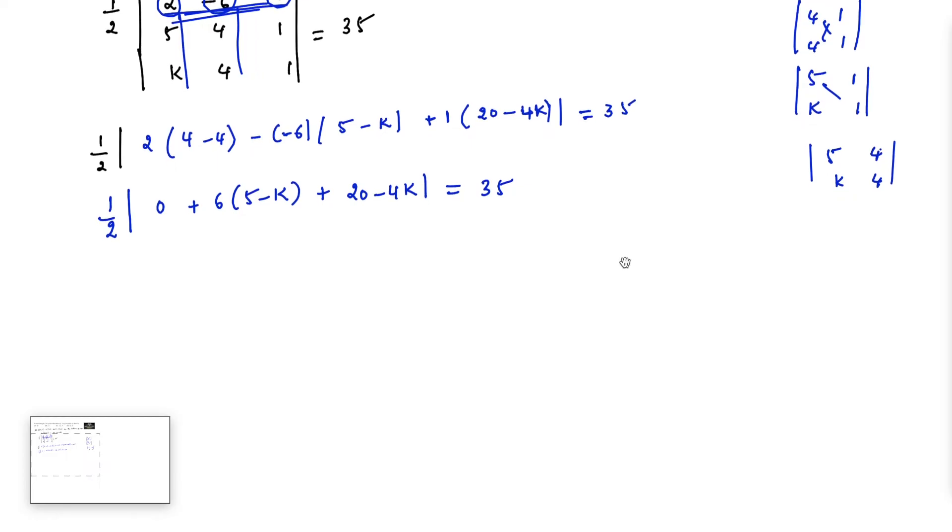Which implies that 6 times 5 is 30 minus 6k plus 20 minus 4k, modulus equals 35 times 2, that's 70. So 30 plus 20 is 50 minus 6 plus 4 is 10k, mod equals 70.